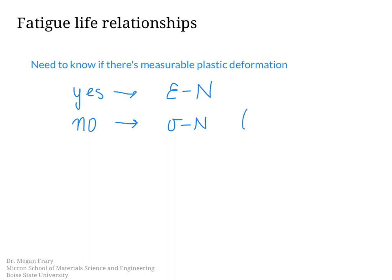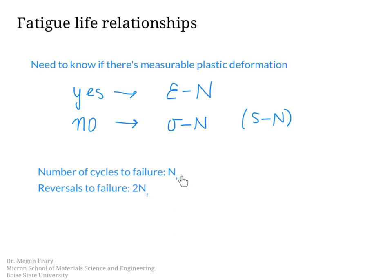Sometimes this is called SN, and the plots are called SN diagrams — that's just meaning stress compared to the number of cycles to failure. The variable for the number of cycles to failure is N_F, and we're probably more interested in the reversals to failure, which is 2N.